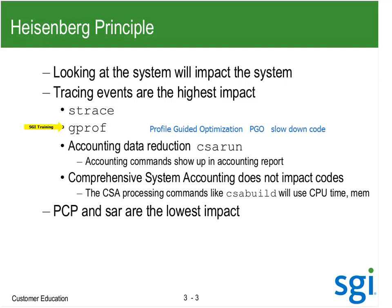Accounting data itself is not a load, but post-processing is. Commands like CSA build will use CPU time depending upon how much data they generate. SAR is actually the lowest impact application. Nowadays with 4096 CPUs, we do have things going on in the kernel to reduce contention on /proc. Anything like top going into /proc/stat for CPU utilization is creating contention. Performance Co-pilot and SAR basically look at the same data, but SAR is an ASCII tool and Performance Co-pilot is a GUI. We're going to start using them in detail tomorrow.